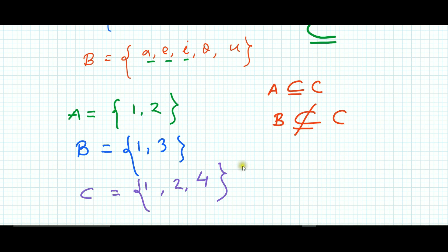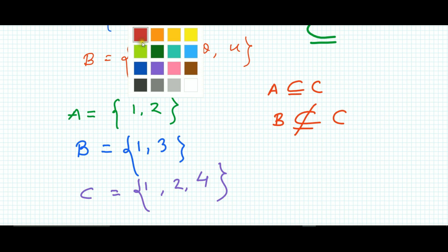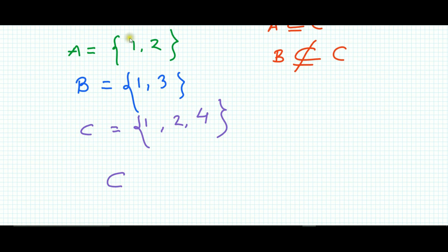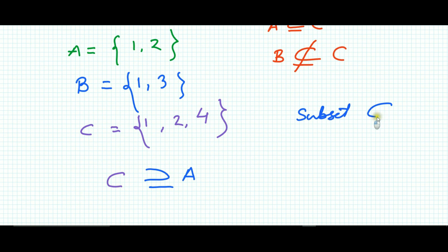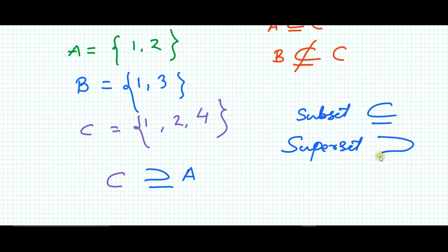C is the superset of A. The subset symbol is ⊆ — the open portion faces right and the closed side is on the left. The superset symbol is just the opposite of the subset symbol.